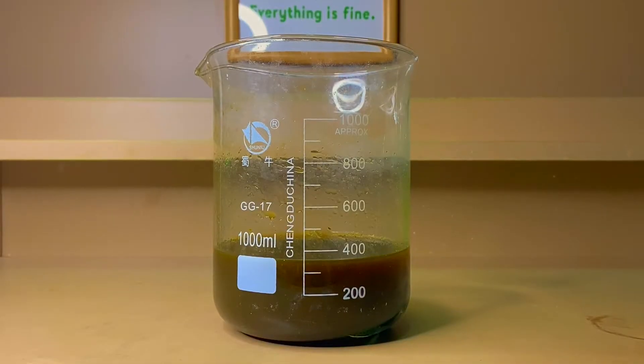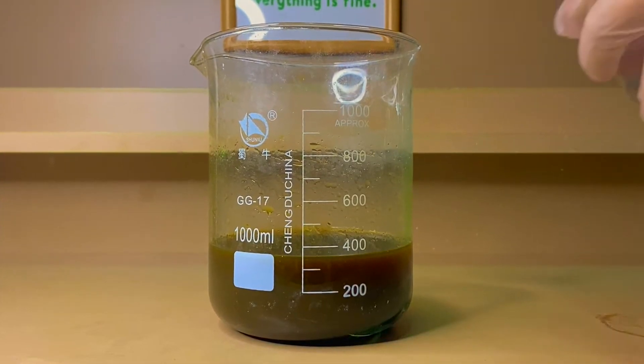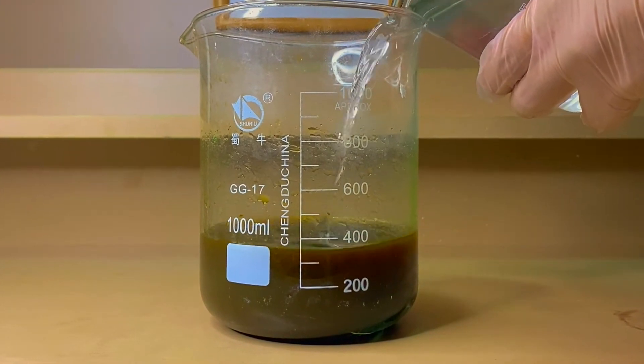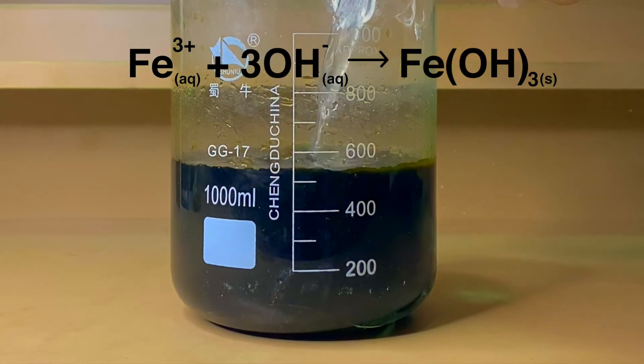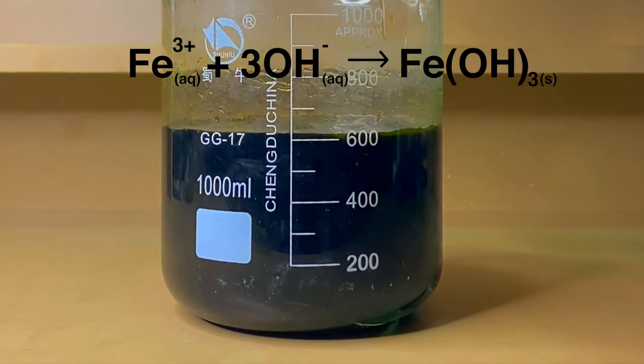I then added an excess amount of sodium hydroxide solution. Immediately, a precipitation reaction occurred as the ferrous sulphate is converted to the insoluble iron-ferrous hydroxide.